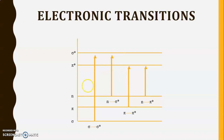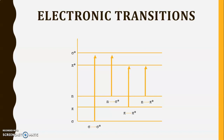These are the four different electronic transitions occurring in a molecule when it absorbs UV radiation. In the next lecture, we will see these electronic transitions in detail.